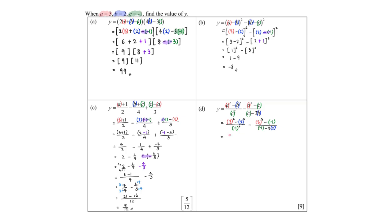Let's continue to simplify slowly. 3 squared will become 9. My 2 squared will become 4. The whole thing is over negative 1 times negative 1 which is 1. 3 to the power 3 is 3 times 3 times 3, which gives me 27. And I note again: when I minus a negative value, it is the same as adding that value in. So this one will be over negative 1. 3 times 2 is 6.